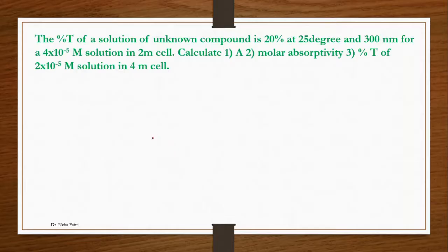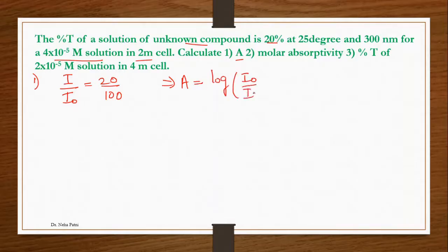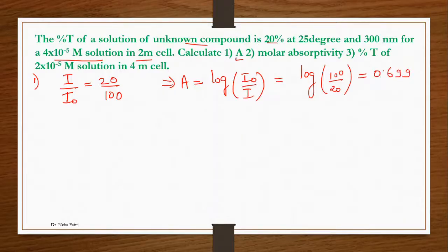The next question says the percentage transmittance of an unknown solution is 20% at 300 nm in a 2-metre cell; calculate the absorbance. The percentage transmittance means (I/I₀) × 100 = 20%, so I/I₀ = 20/100. Absorbance A = log(I₀/I) = log(100/20). When you calculate this you get A = 0.699.